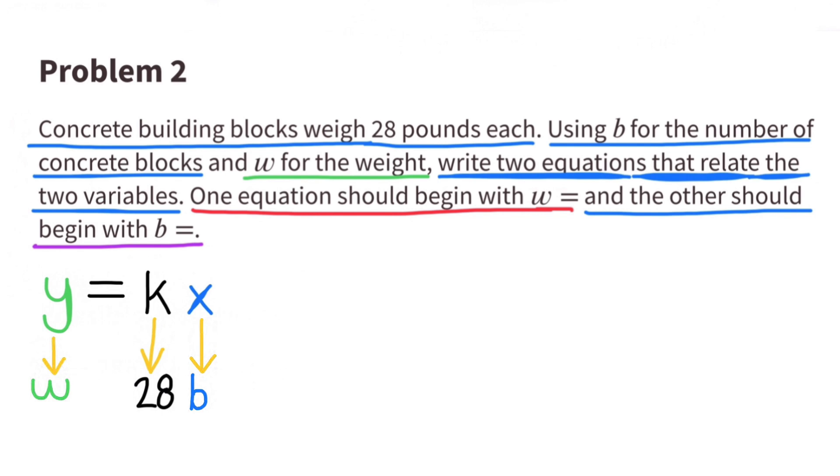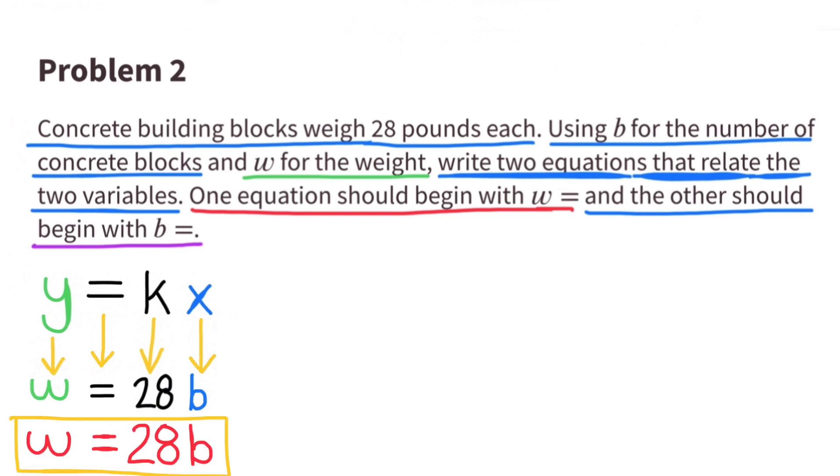And the x is represented by a b, for the number of concrete blocks. So w equals 28b, or w equals 28 times b.